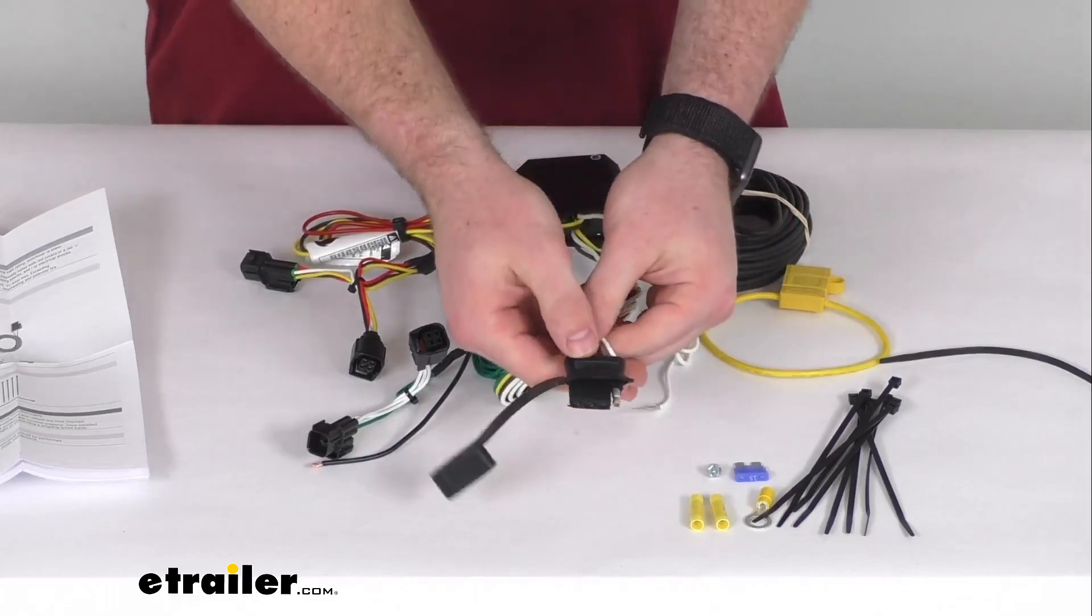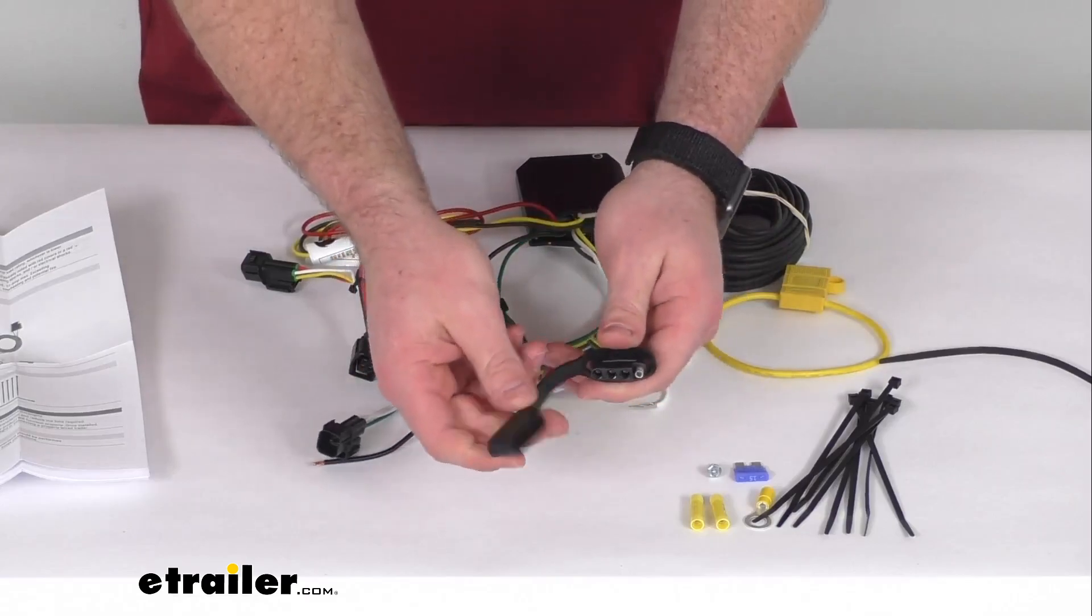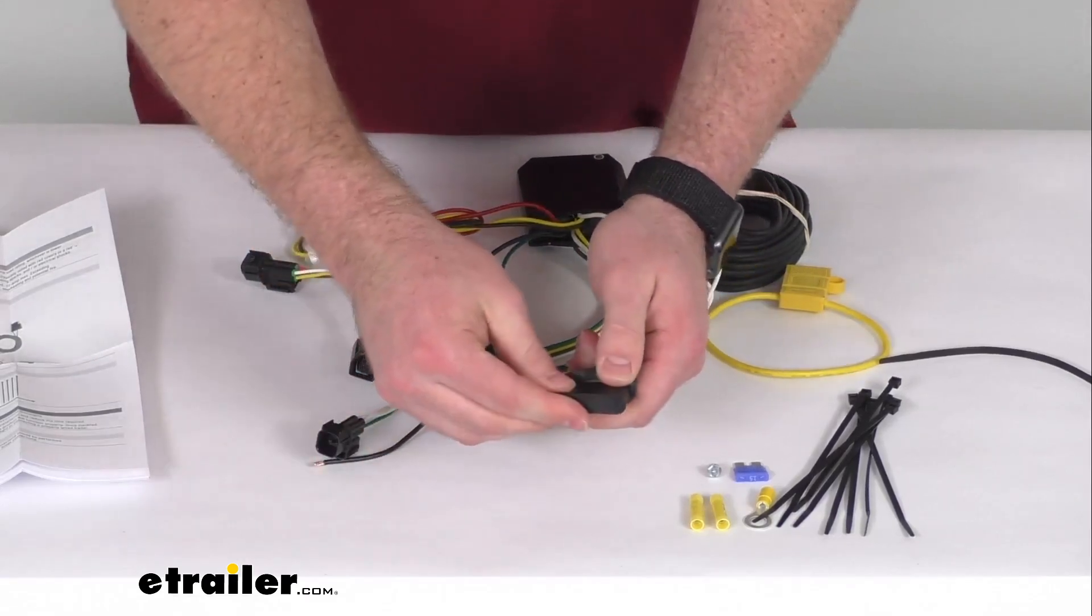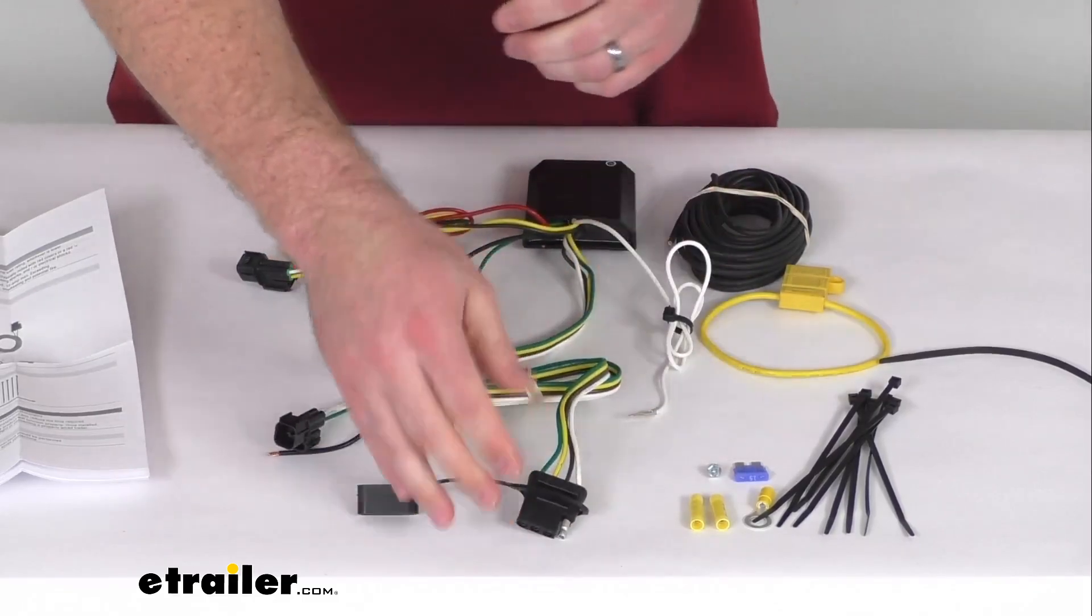And then your four pole flat trailer connector wiring here is going to be at the back of your vehicle. They do include a dust cap so that you can protect those connections from dirt and debris and that sort of thing. And then it'll be ready for you to plug in and hook up to your trailer.